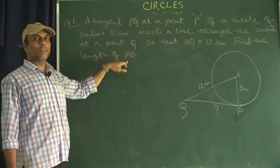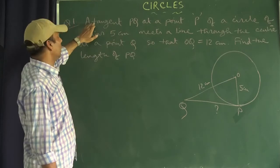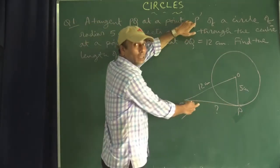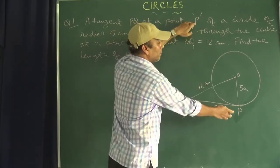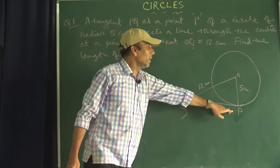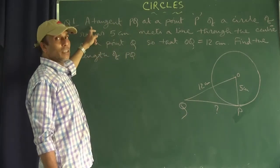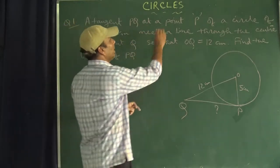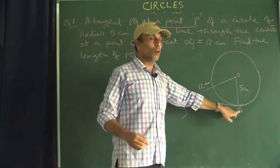First, our work is to understand the question part by part. A tangent PQ at a point P — so PQ is a tangent at P, which means P must be the point of contact. From the phrase 'at a point P' we understand that P is the point of contact.